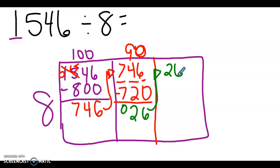Now I need to get as close as I can to 26. I know that when I multiply eight times three, it's going to give me 24. And I've got to subtract once again.